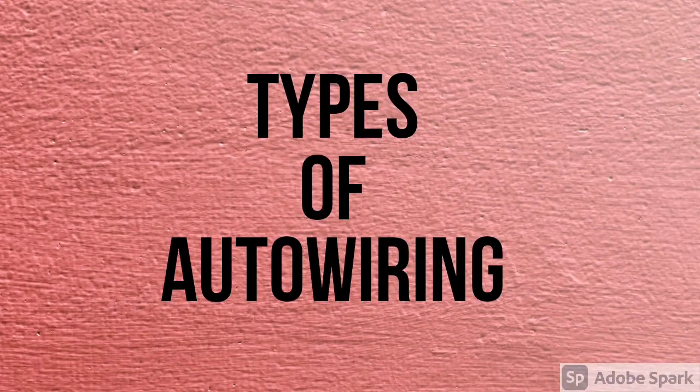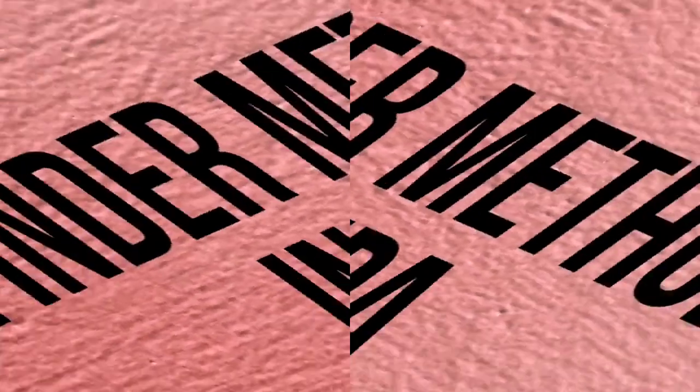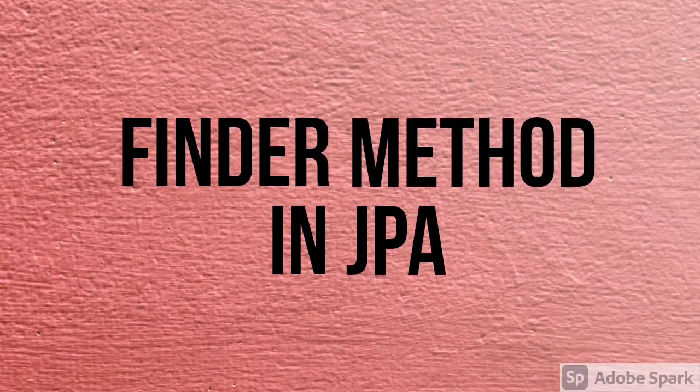One more question on Spring Boot was about the types of autowiring — how can we autowire in Spring Boot? There are multiple types: by name, by type, auto-detect, and the default is 'no'. Go through these once.